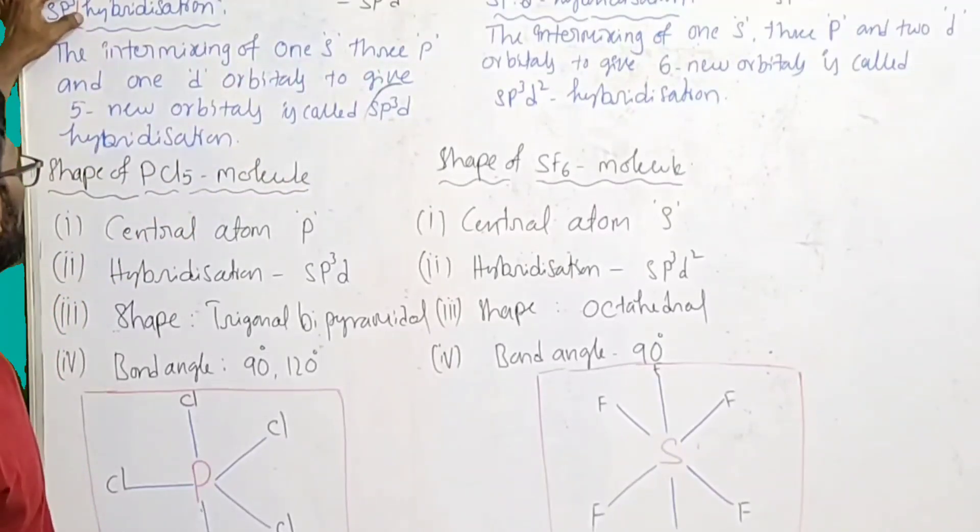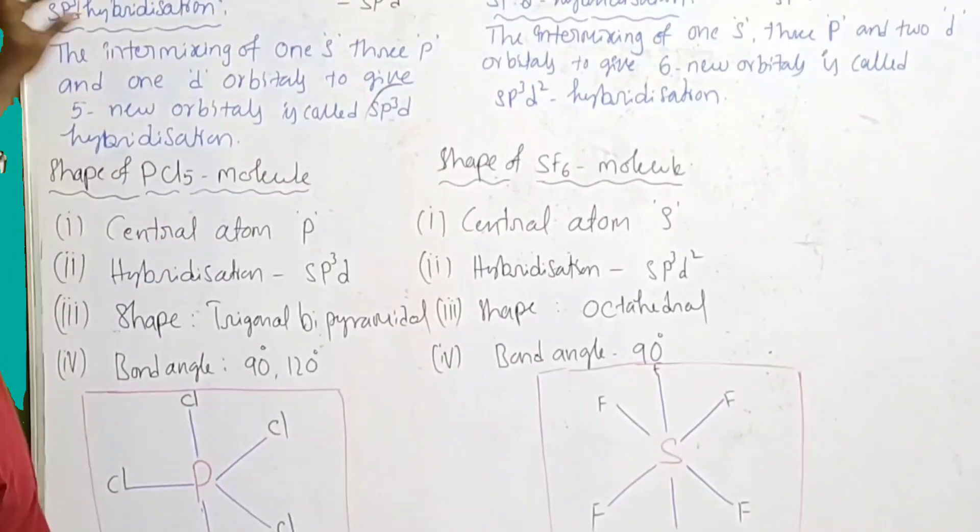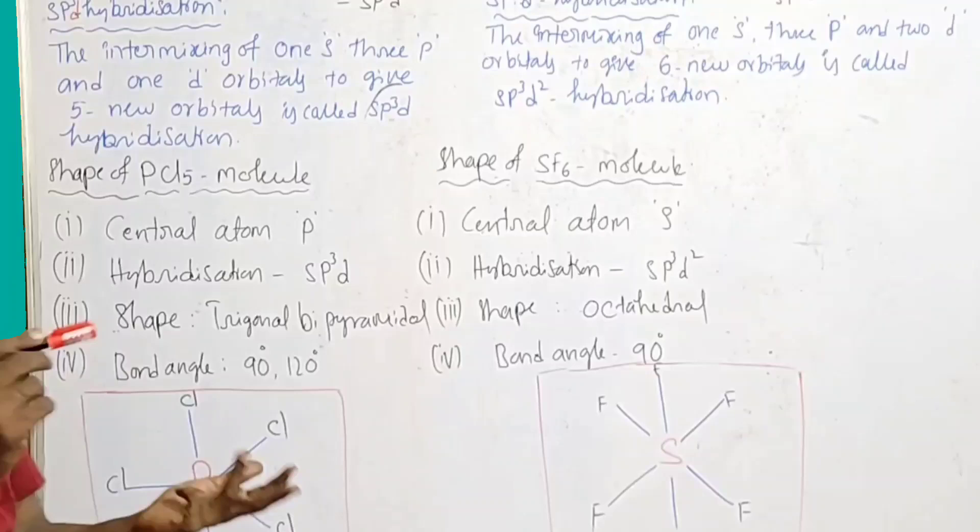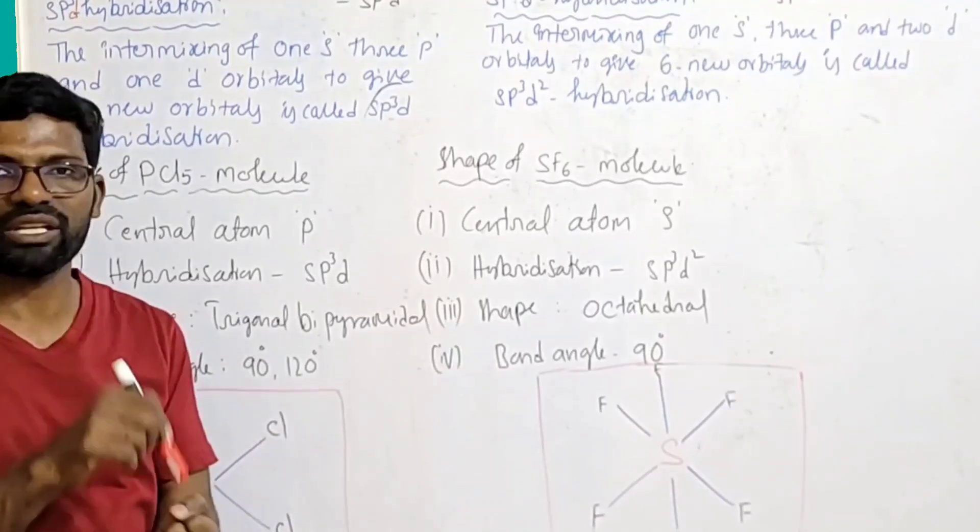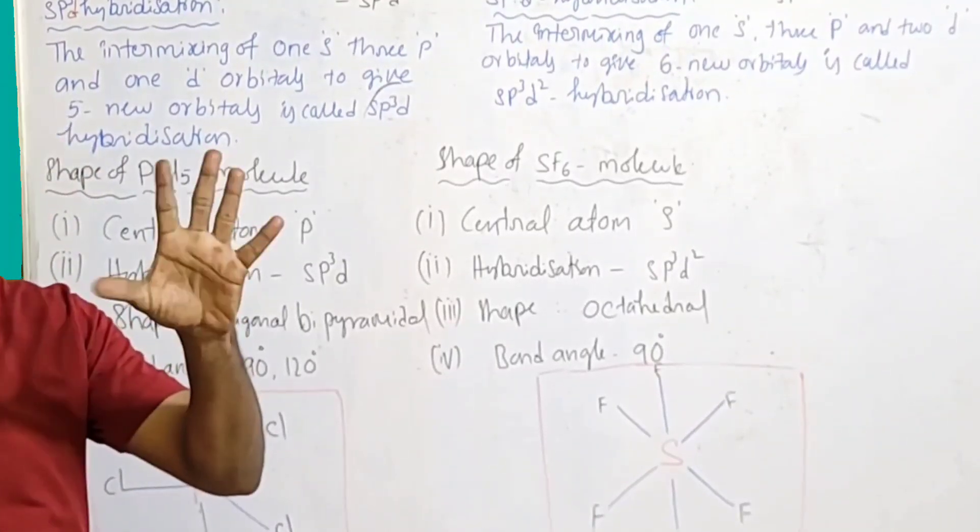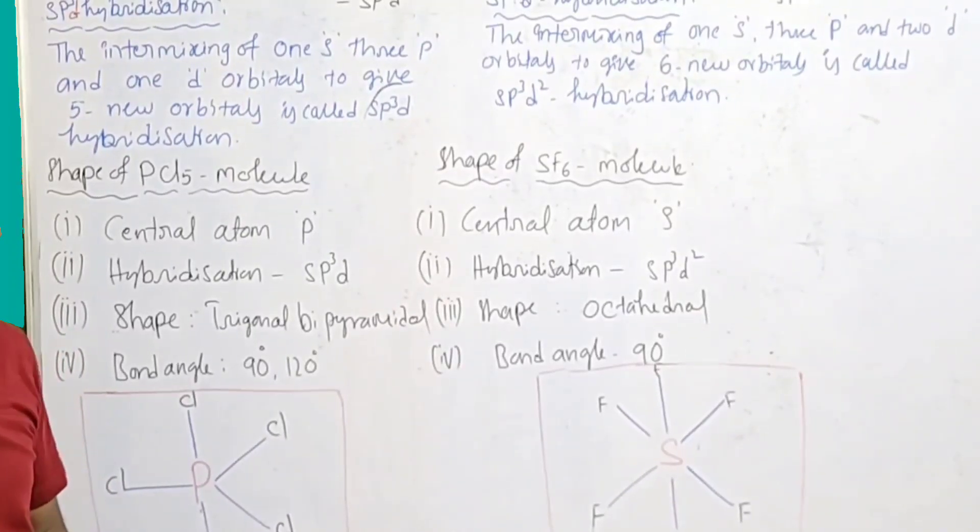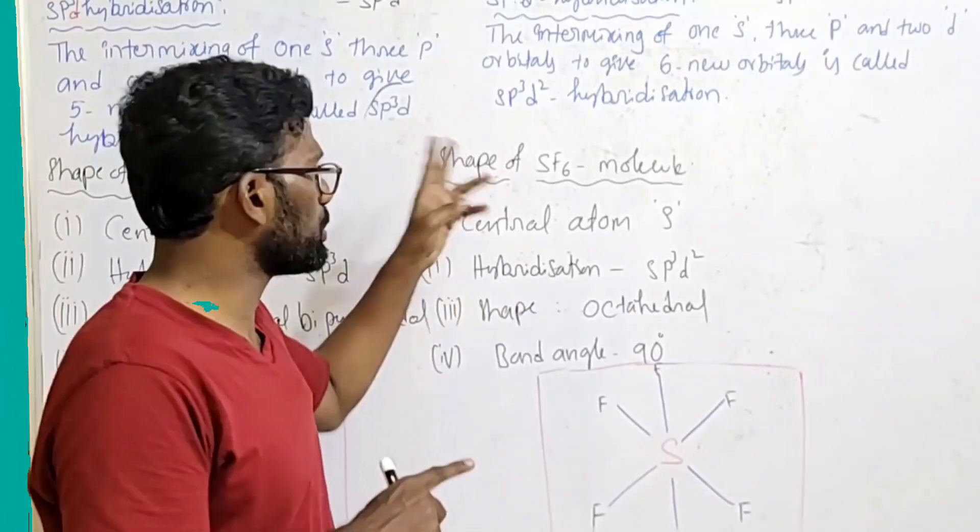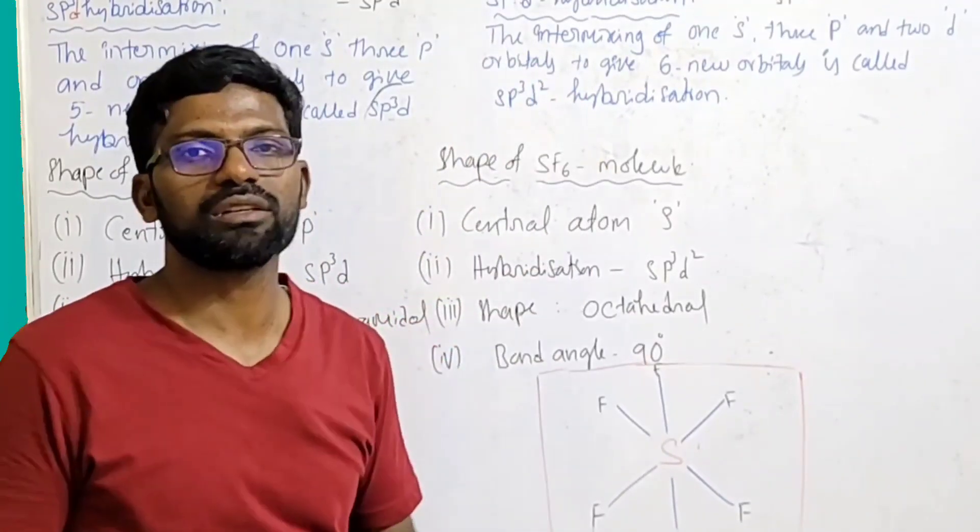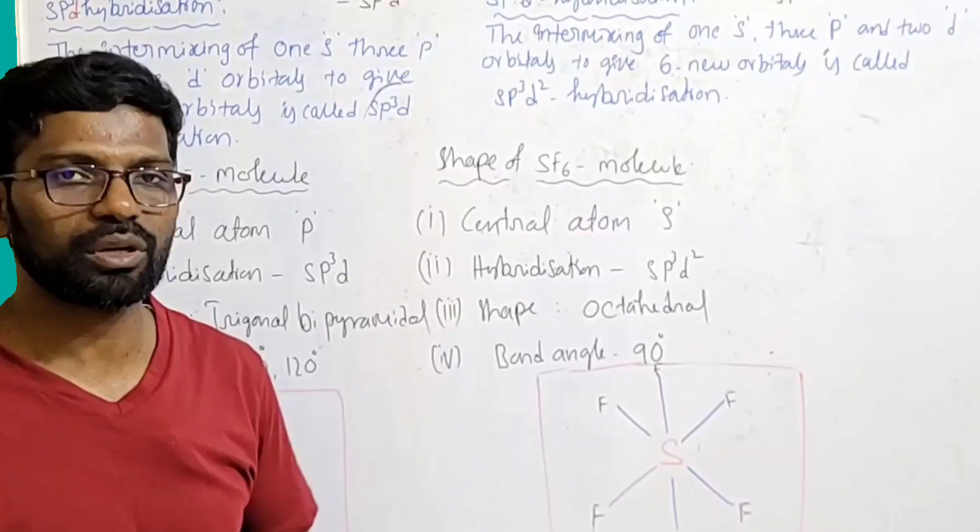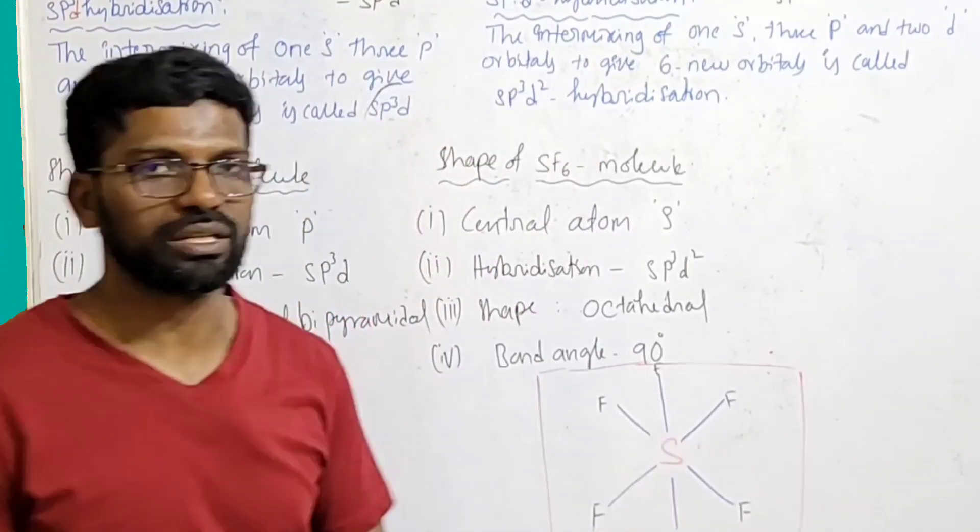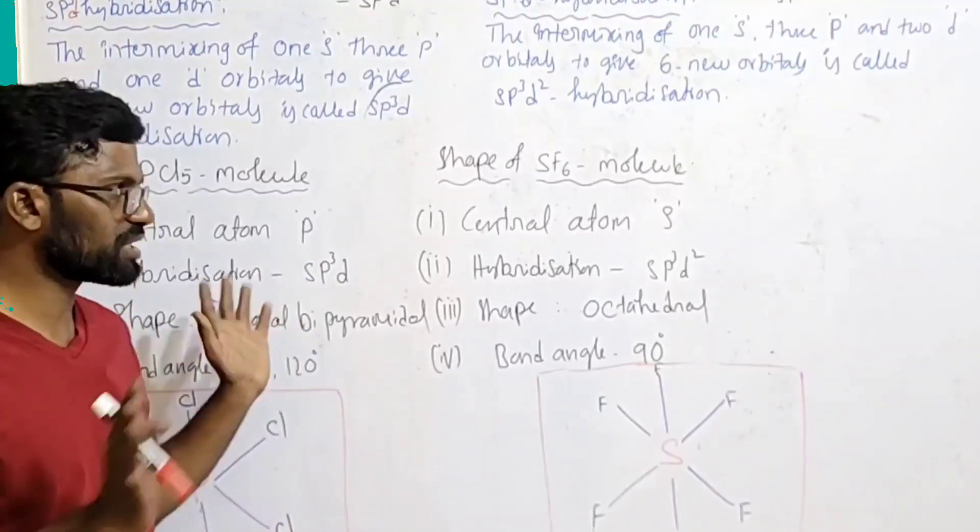You can study comparatively very fast and easily. The intermixing of 1 s orbital, 3 p orbitals, and 1 d orbital to give five new orbitals is called sp3d hybridization. The intermixing of 1 s orbital, 3 p orbitals, and 2 d orbitals - a total of 6 new orbitals - is called sp3d2 hybridization. That is all about hybridization definitions.